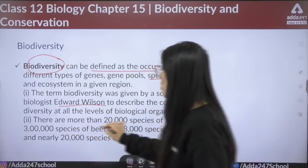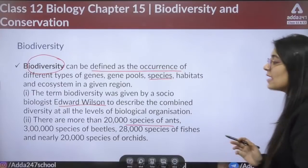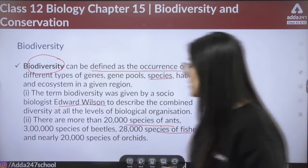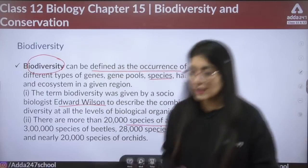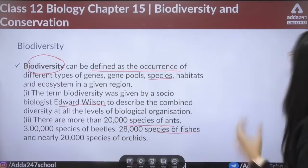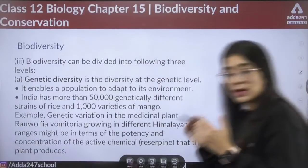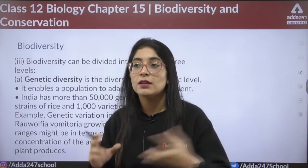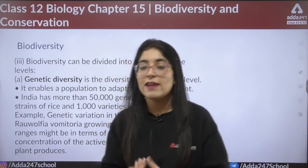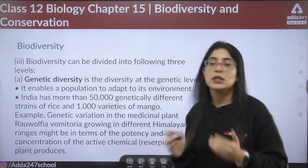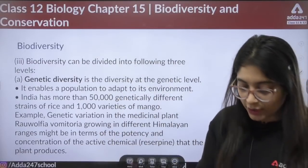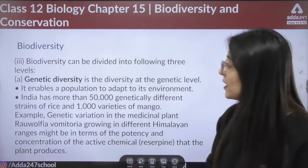There are more than 20,000 species of ants, 3 lakh species of beetles, 28,000 species of fishes, and nearly 20,000 species of orchids. These are the species numbers. It is not necessary to memorize every species number — just be aware of these facts.